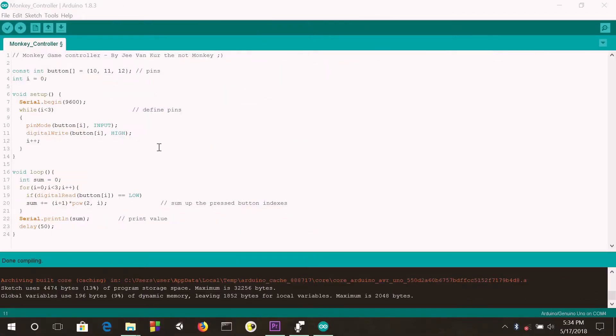Here's what the code looks like. We have given each button a specific index, and we are printing the sum of the indexes of the pressed buttons.